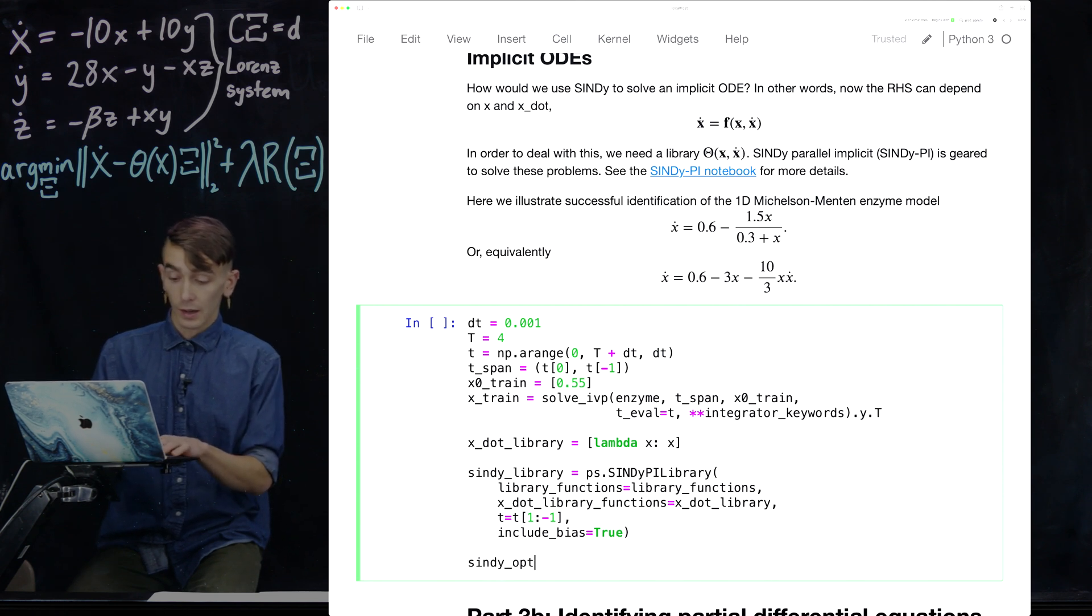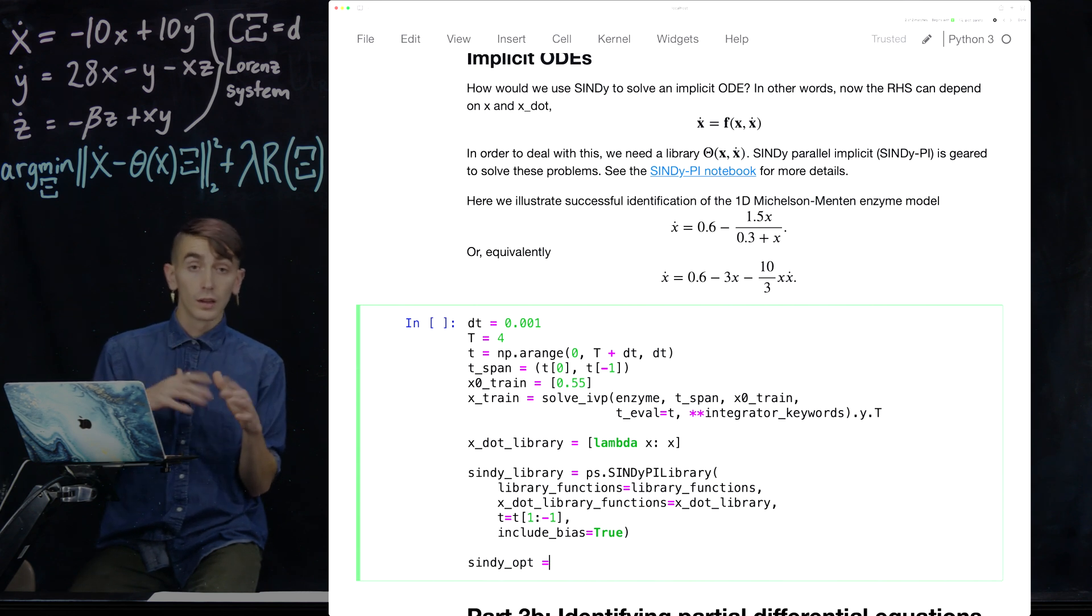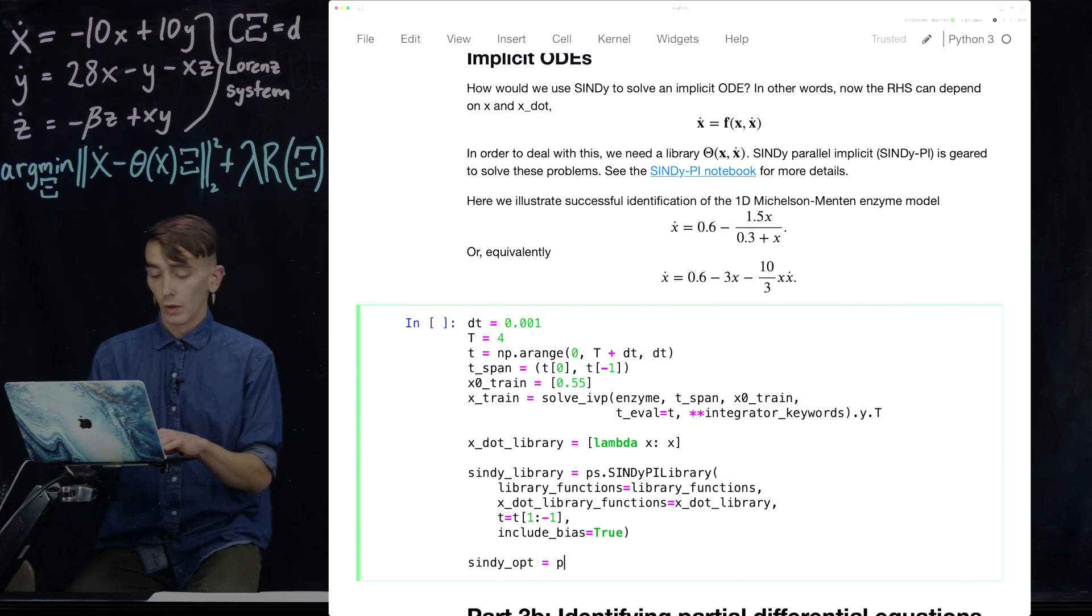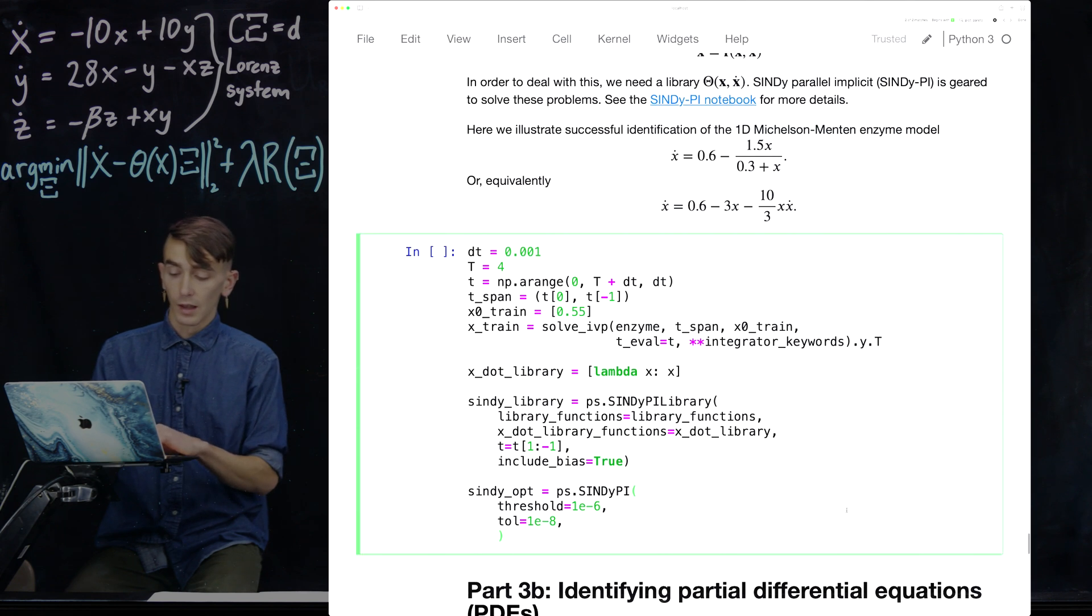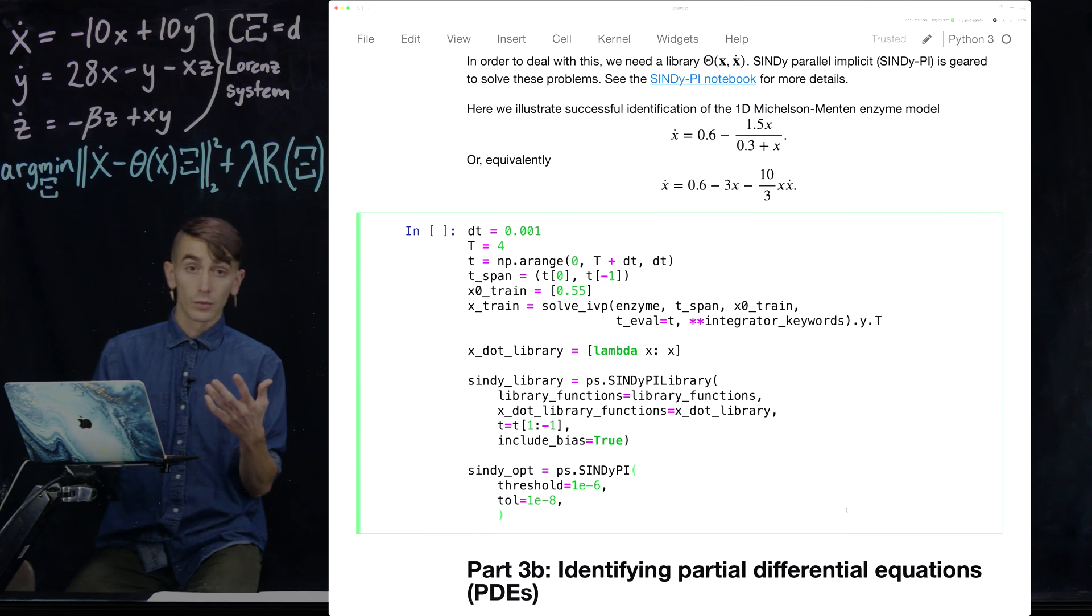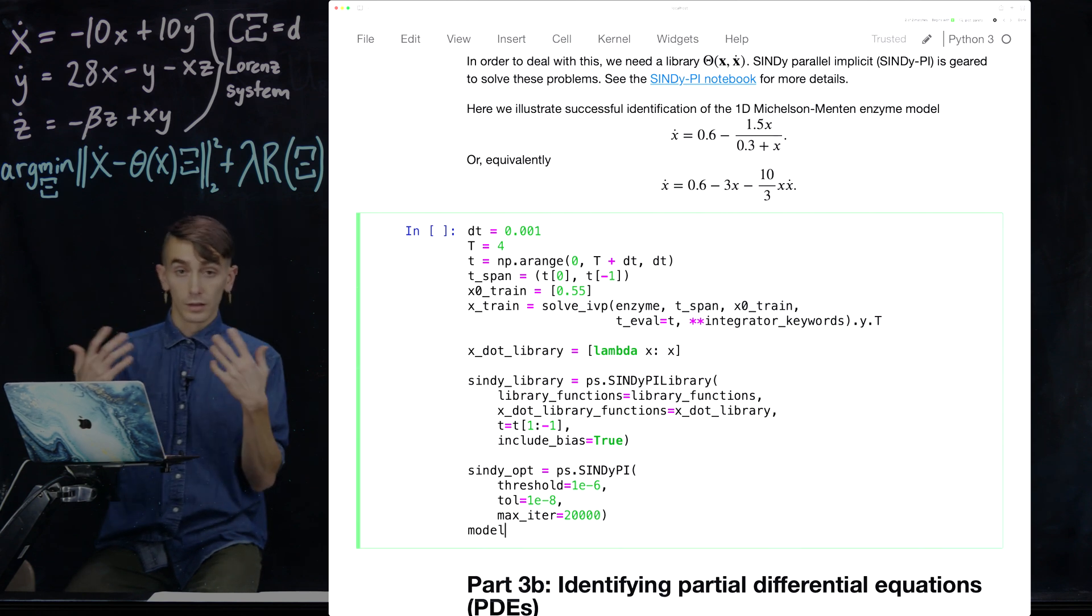So that's the CindyPi library. We also want to define the CindyPi optimizer. So because the library is different, we have to solve that optimization problem in a bit different of a way. So that optimizer is just called CindyPi. And we're going to use just a very small threshold. We're going to increase the solver tolerance because this tends to help. This is actually using a CVXPi routine. And the defaults are a little low for our purposes. And then we'll turn up the maximum iterations as well for the same reason. Now we have a CindyPi library, CindyPi optimizer, and we can fit the model.